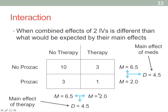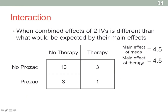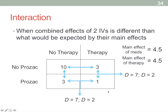The effect of therapy also shows a difference of 4.5 points. But looking at between-cell effects, those who went from no therapy/no Prozac to no therapy/Prozac showed a decrease of 7 points, while those going from therapy/no Prozac to therapy/Prozac showed only a 2-point decrease. These don't match the main effects of either medication or therapy. The same holds in reverse. So there is an interaction — the main effects don't reflect the between-cell effects.